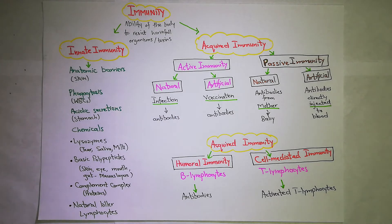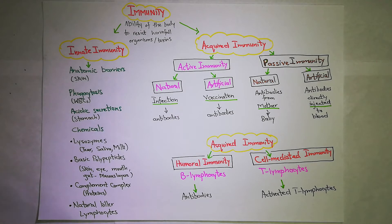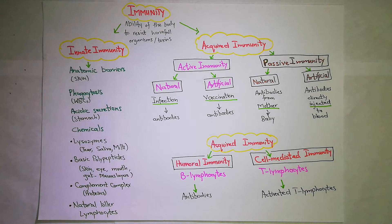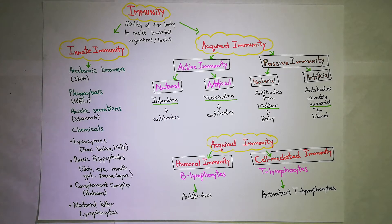Acquired immunity is activated when some external stimulus comes to the body. For example, if an infection comes to the body, then the body will utilize its acquired ability. So acquired immunity is said to be acquired after some external stimulus.